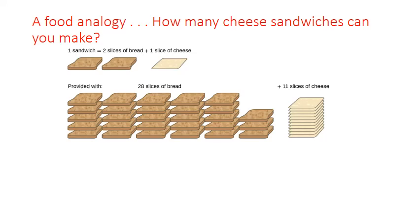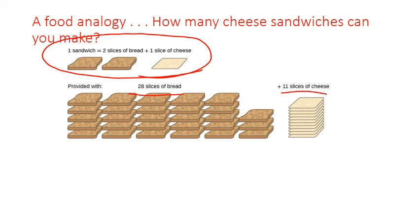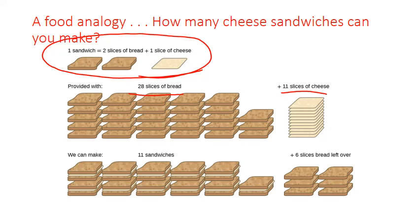Let's look at a food analogy first. We're making cheese sandwiches with exactly one slice of cheese and two slices of bread for each sandwich. Say I go to the cabinet and find 28 slices of bread and 11 slices of cheese. How many sandwiches can I make? Using the recipe ratio of one slice of cheese per two slices of bread, I'll run out of cheese long before I run out of bread. I can make 11 sandwiches and still have six slices of bread leftover. In reaction terms, cheese is the limiting reactant and bread is the excess reactant.